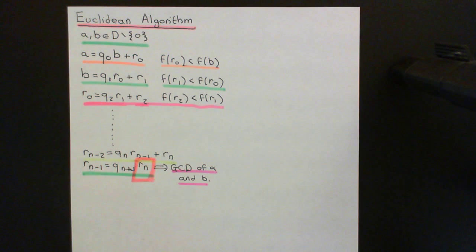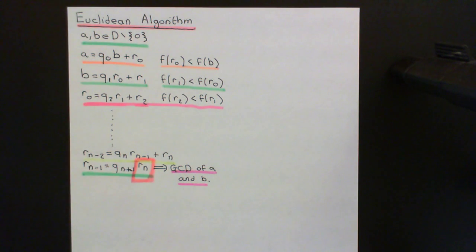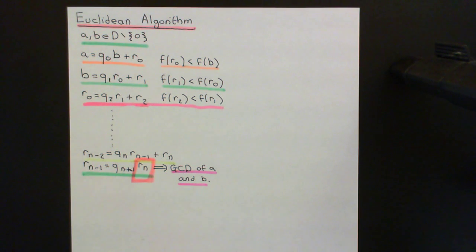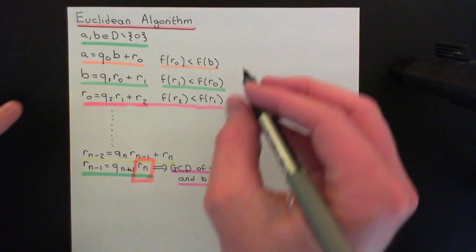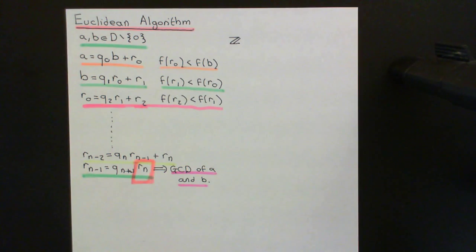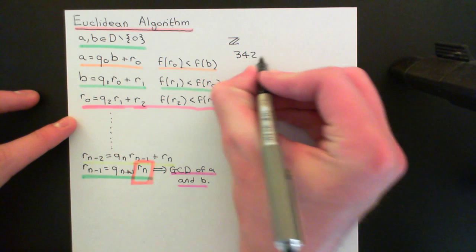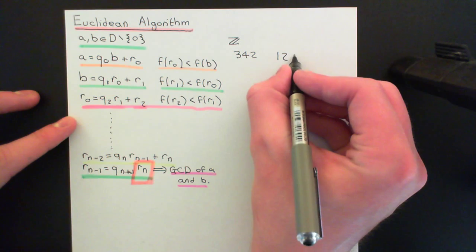Before explaining why the final remainder is the GCD, let's do a concrete example. In the abstract form it looks intimidating, but it's actually very straightforward — taught at age 14 in the context of integers. So let's work in our favourite Euclidean domain, the integers, and pick some arbitrary numbers: 342 and 126.